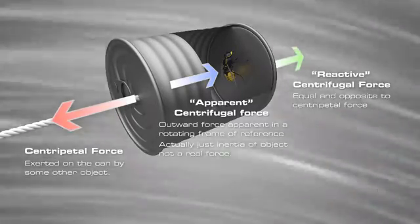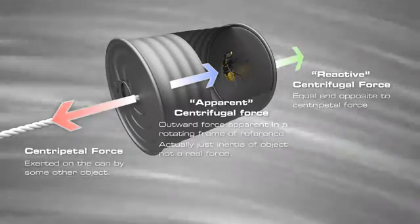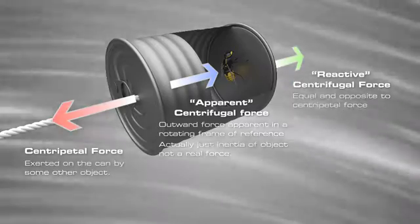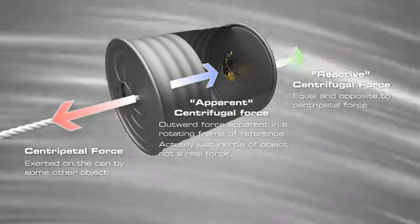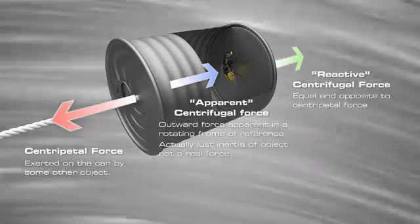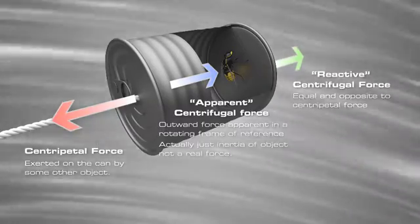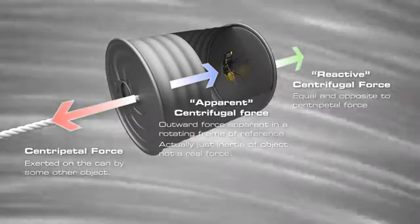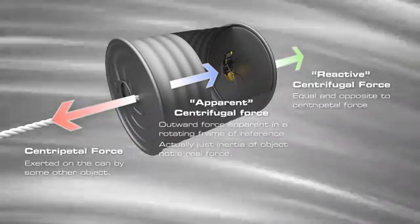The object naturally wants to travel in a straight line, but the centripetal force doesn't allow this. This type of force is associated with describing motion in a non-inertial reference frame and referred to as a fictitious or inertial force.